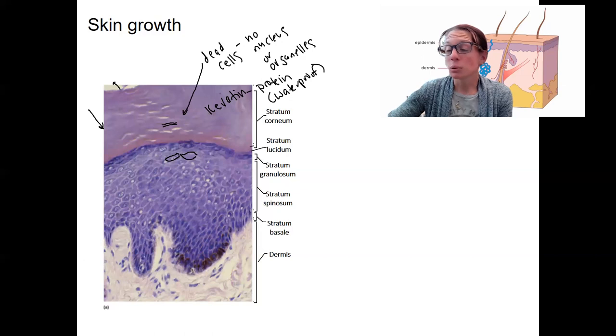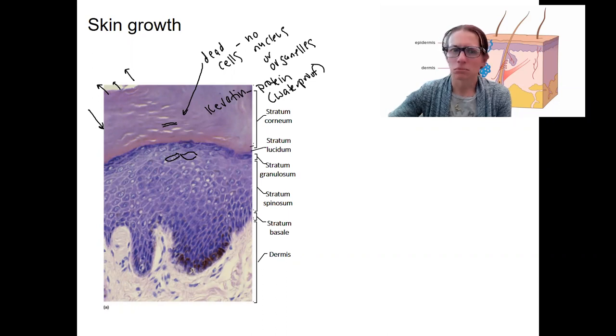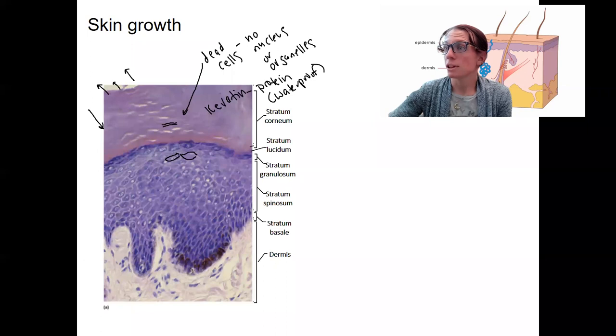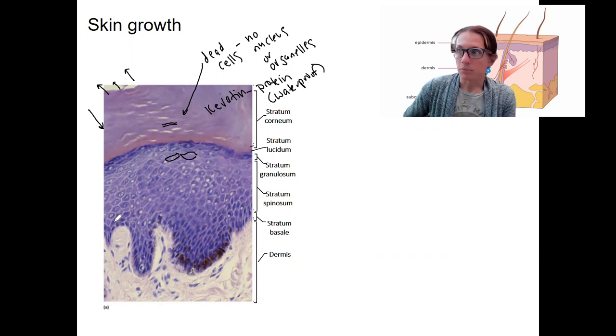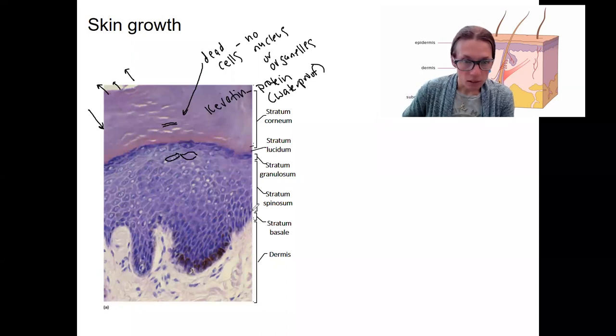So those are continually lost, right? If those are falling off all the time, they need to be replaced by new cells. If they are replaced by new cells, let's talk about that process. The cells at the very bottom down here are, what layer is that? The stratum basale, single layer.